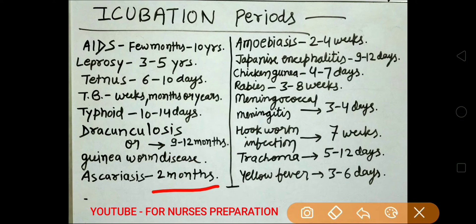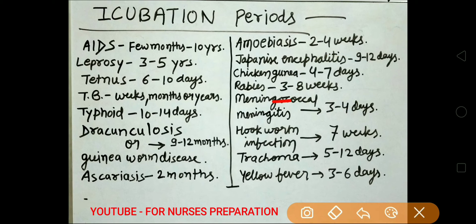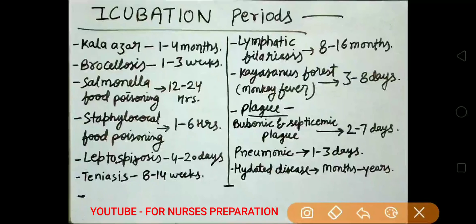Ascariasis 2 months. Amoebiasis 2 to 4 weeks. Japanese encephalitis 9 to 12 days. Chikungunya 4 to 7 days. Rabies 3 to 8 weeks. Meningococcal meningitis 3 to 4 days. Hookworm 7 weeks. Trachoma 5 to 12 days. Yellow fever incubation period 3 to 6 days. Kala-azar disease 1 to 4 months.